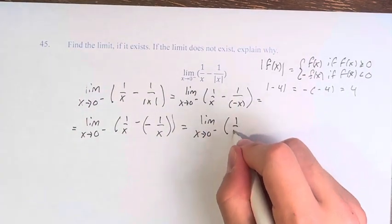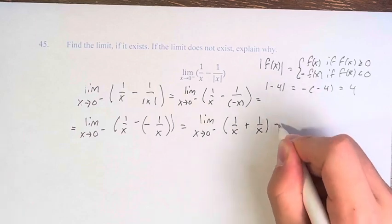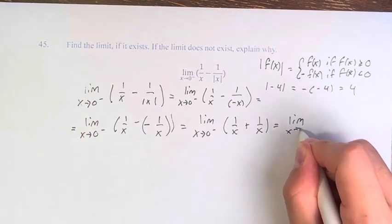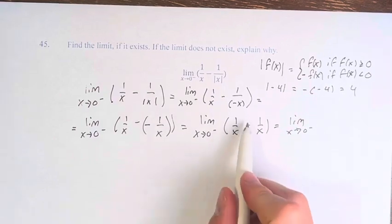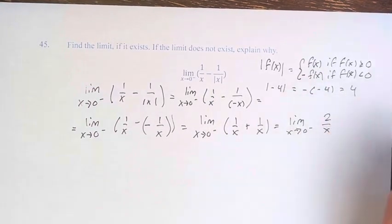Therefore, this is 1 over x, negative negative plus 1 over x. Therefore, we have two fractions that we're adding, same denominator, add the numerators. And 2 over x.